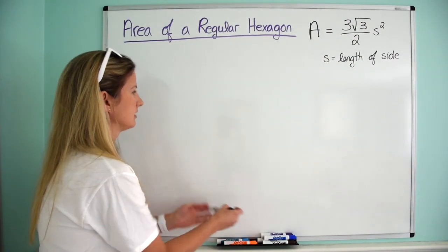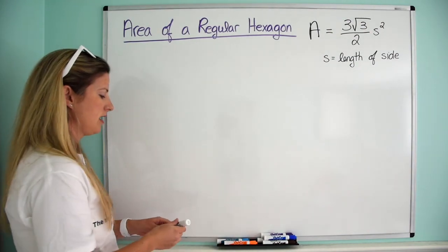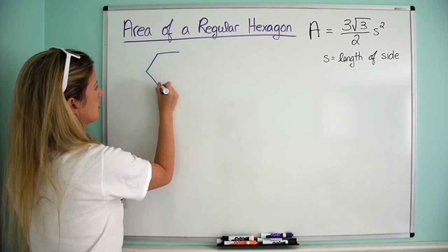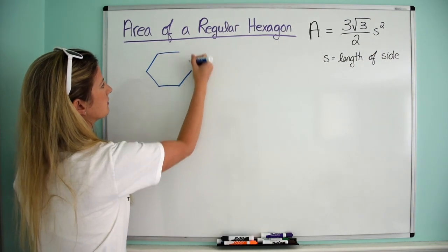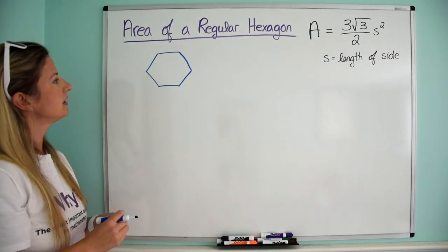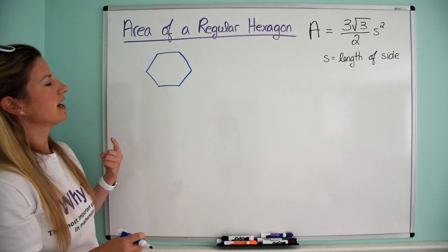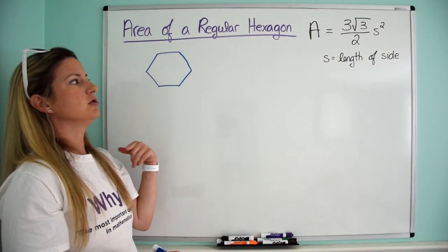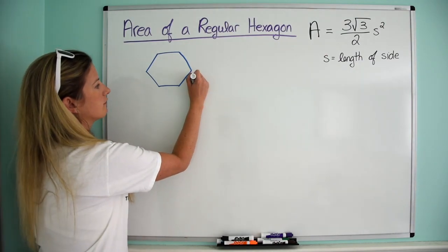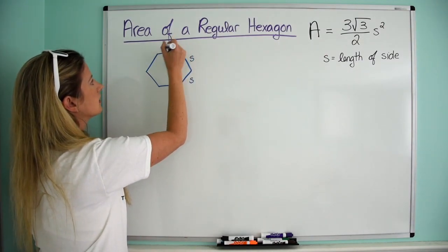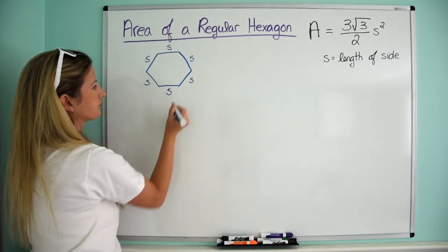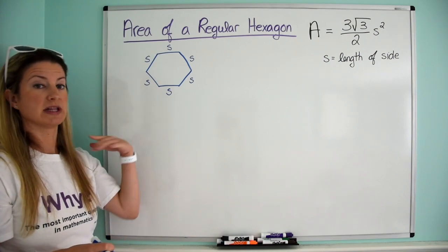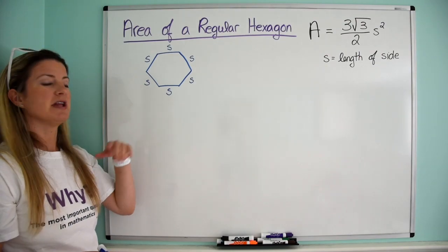First let us draw a hexagon — I'm drawing freehand so bear with me. A hexagon has six sides, and remember this is a regular hexagon, so all those sides have the same measure. Because our formula uses the length of the side squared, we're going to call every side s. Instead of using seven like in my other video, we are going to use s.